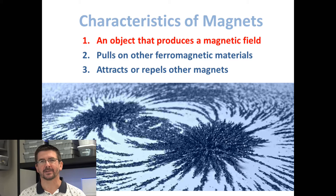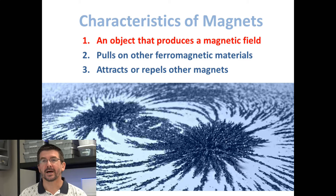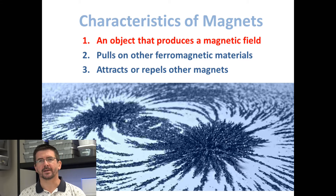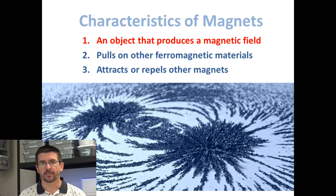In order to be a magnet, an object must produce a magnetic field. We have two types of magnets that we'll be talking about in detail a little bit more later, but we have objects that permanently produce a magnetic field, meaning they have a magnetic field all the time.